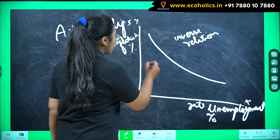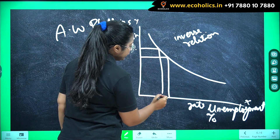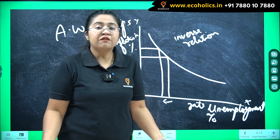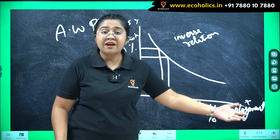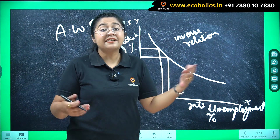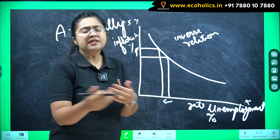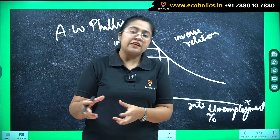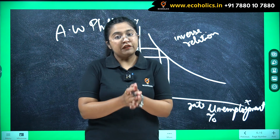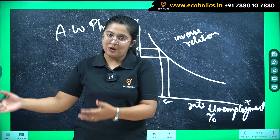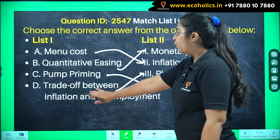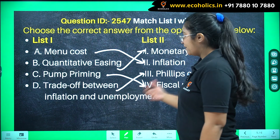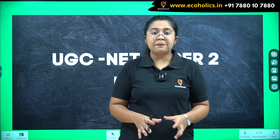When there is more inflation rate, there will be less unemployment, meaning more people are employed, they are earning money, demanding goods, and increased demand raises the prices of commodities, resulting in inflation. This is the inverse relationship conceptualized by A.W. Phillips. However, due to concepts like stagflation, the Phillips curve had to be modified by various other economists. In the context of this question, we can see why the trade-off between inflation and unemployment is associated with the Phillips curve.